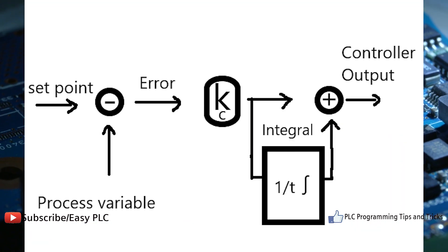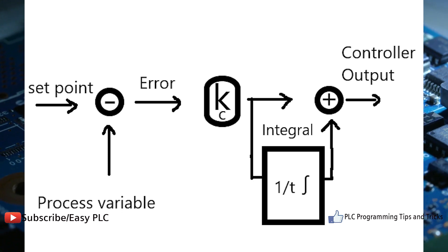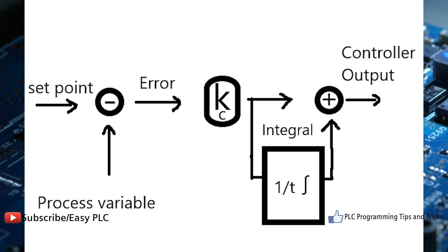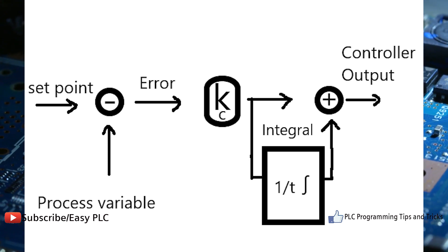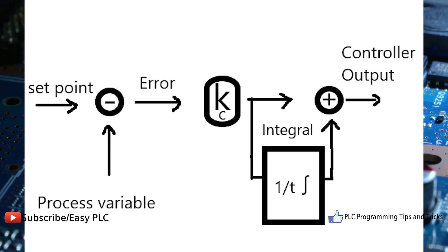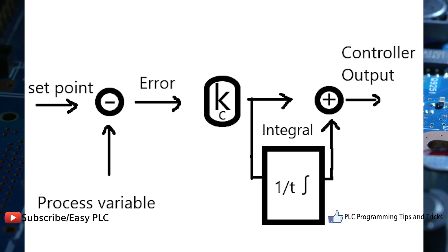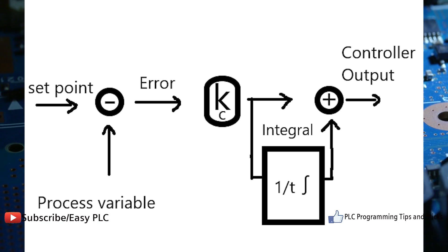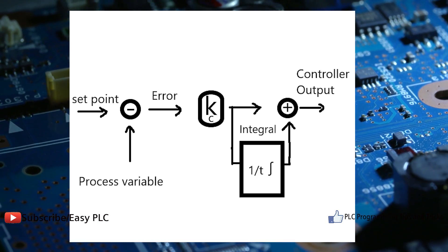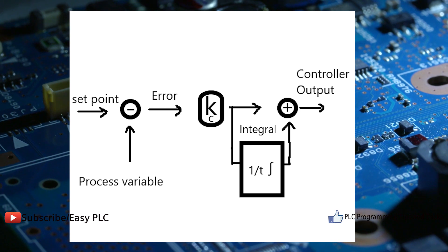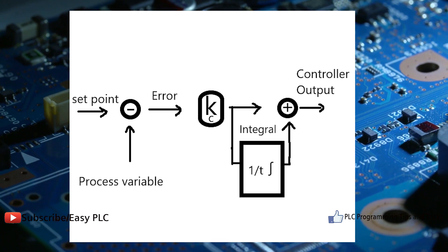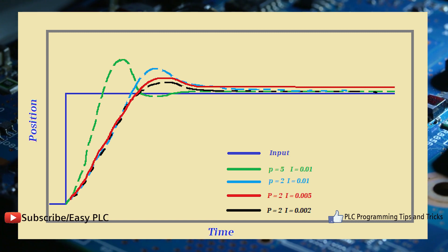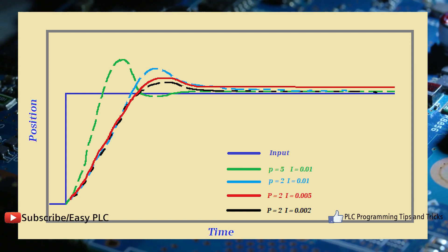I controller: Due to limitation of P controller where there always exists an offset between the process variable and setpoint, I controller is needed, which provides necessary action to eliminate the steady state error. It integrates the error over a period of time until error value reaches to zero. It holds the value to final control device at which error becomes zero.